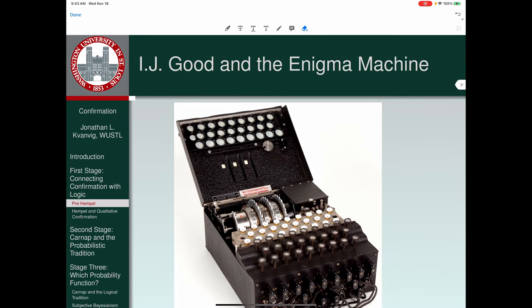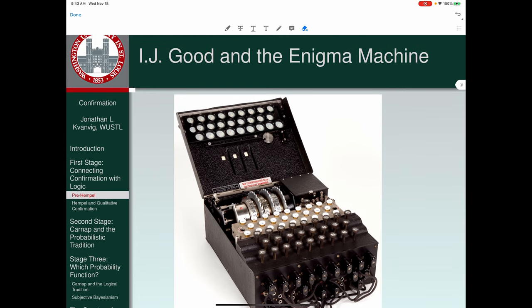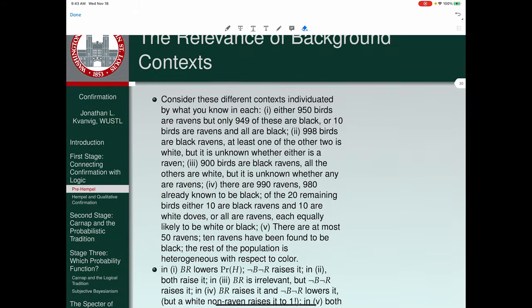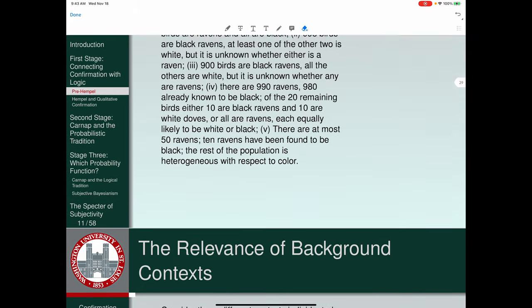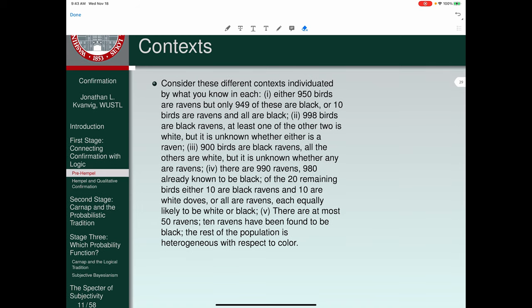So I.J. Good is part of the Bayesian crowd that say, look, whether or not you've got confirmation between a piece of evidence and a hypothesis, you're treating that, A.J. Ayer, as a two-place relation between E and H. It's not. It's a three-place relation between E, H, and background information. So when you give the Raven example that I used first to I.J. Good, he says, look, the most important thing about this is to consider what else you know in terms of background conditions.